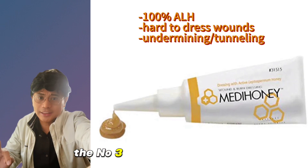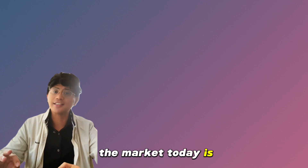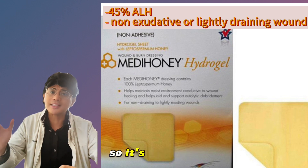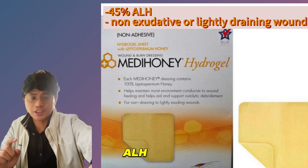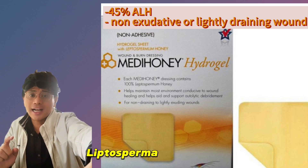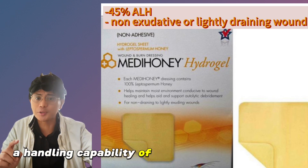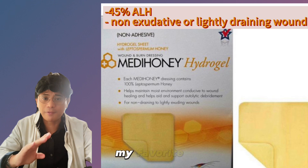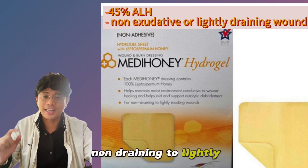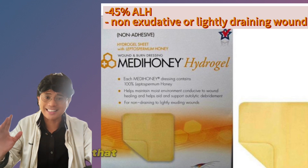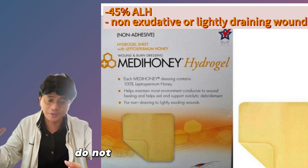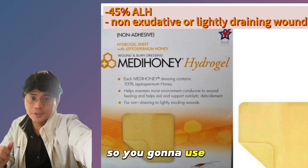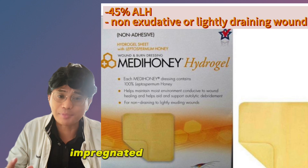The MediHoney hydrogel sheet is 45% Manuka honey. It combines the benefits of ALH with the handling capability of a superabsorbent polymer, and comes in adhesive and non-adhesive versions. It is used for non-draining to lightly exuding wounds. Remember, hydrogel donates moisture, so you would not use this on an otherwise heavily draining wound — you use it when you want to donate further moisture to the wound.